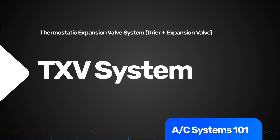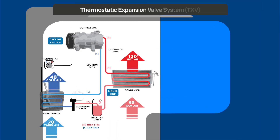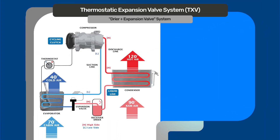This is a CC TXV — cycling clutch thermostatic expansion valve system. It's commonly found on most vehicles through the early 80s and early 90s. Now more companies are going to the expansion valve setup because you have a little bit more regulation with that valve than you do with an orifice tube.